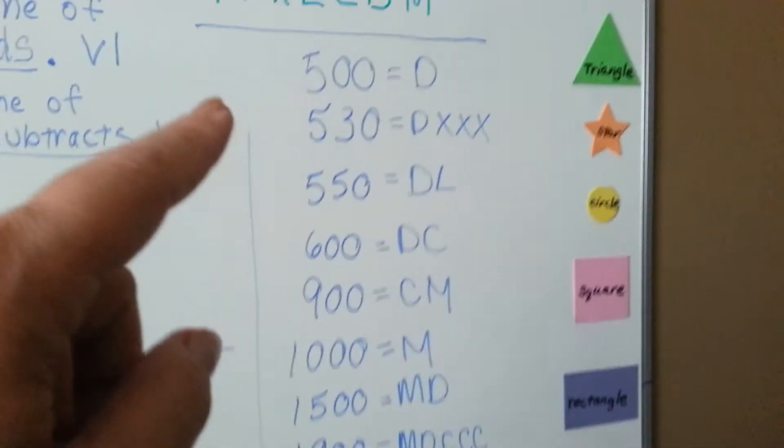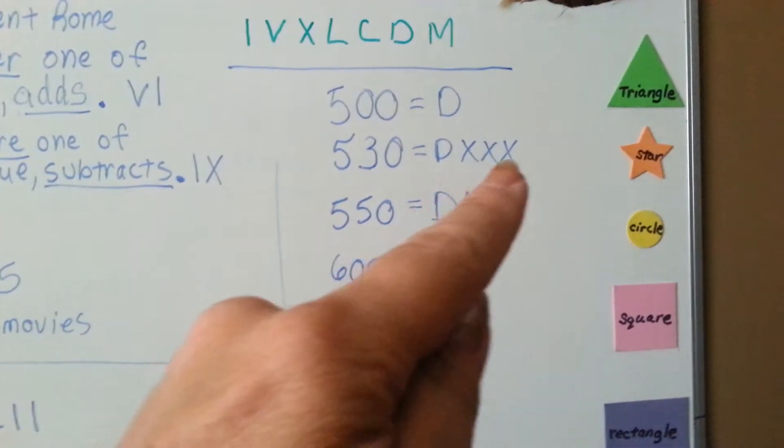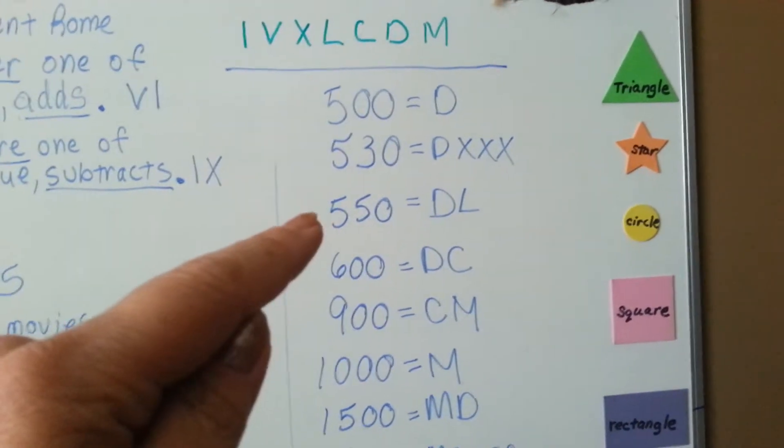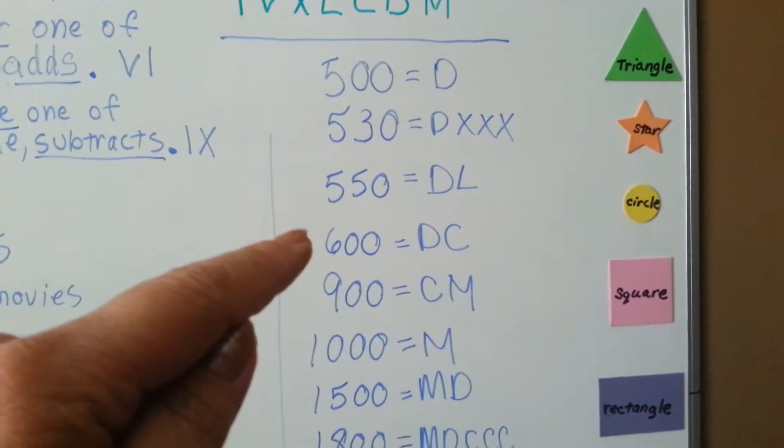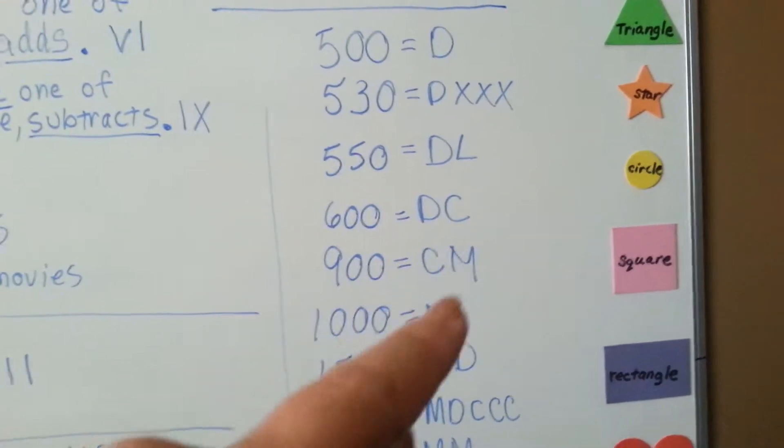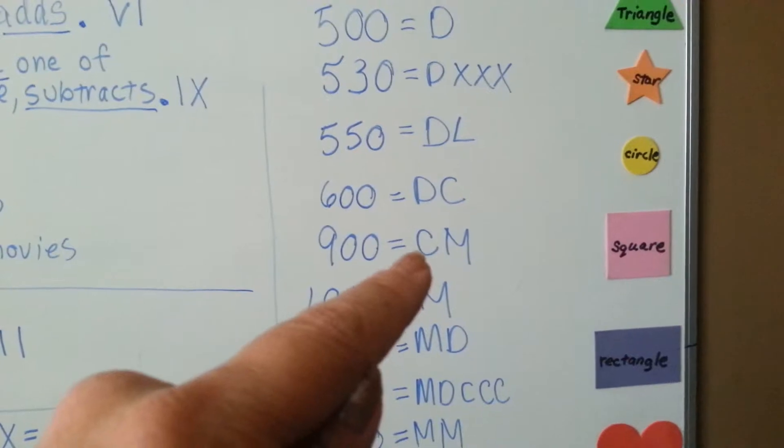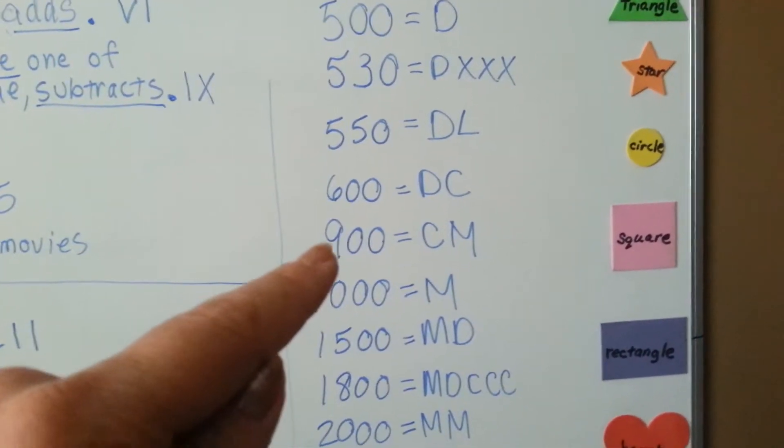On the bigger numbers, D is 500. So if you had a D with 3 X's, it would be 530, or a DL would be 550. DC would be 600 because it would be a 500 and a 100. And because M equals 1000, you would put 100 before 1000 to make 900.